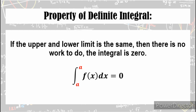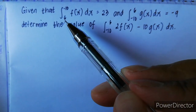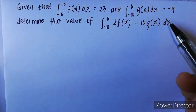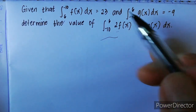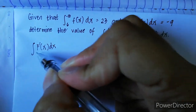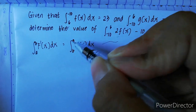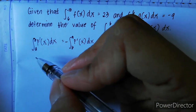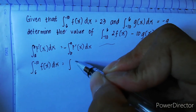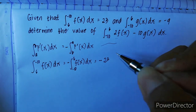Remember this property of definite integrals: if the upper and lower limit are the same, the integral is always equal to 0. Now for our next problem, given that the integral of f(x) dx from 6 to negative 10 equals 23, and the integral of g(x) dx from negative 10 to 6 equals negative 9, we need to find 2f(x) minus 10g(x) with limits from negative 10 to 6. We can interchange limits by adding a negative sign, so the integral of f(x) dx from 6 to negative 10 becomes the integral from negative 10 to 6 with a negative sign — so 23 becomes negative 23.